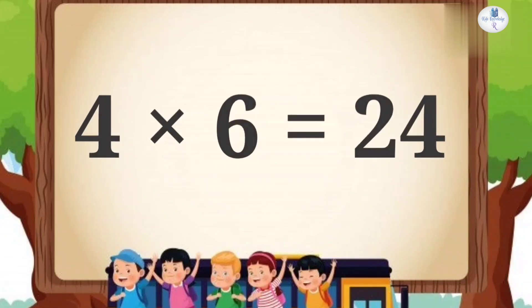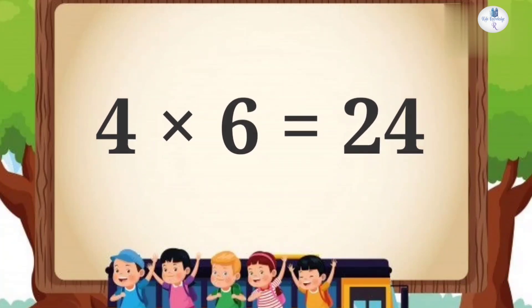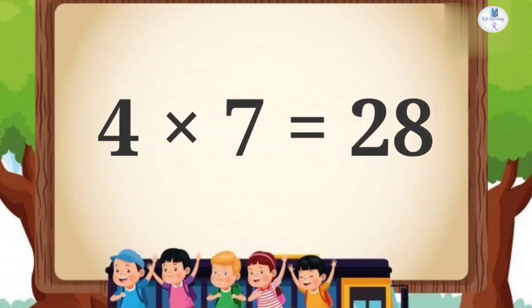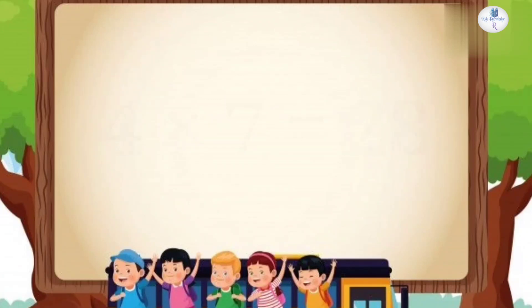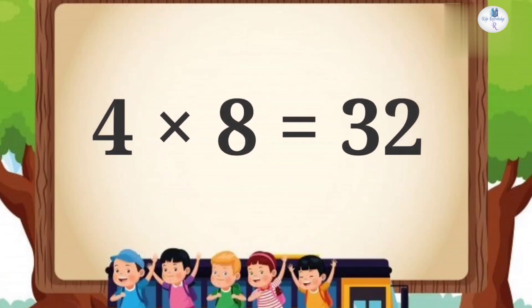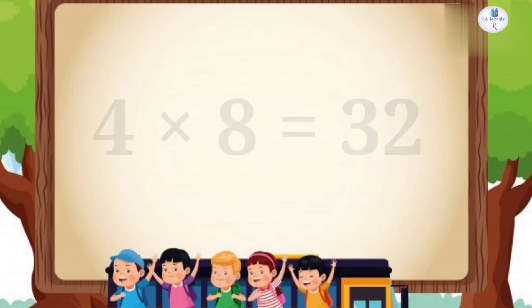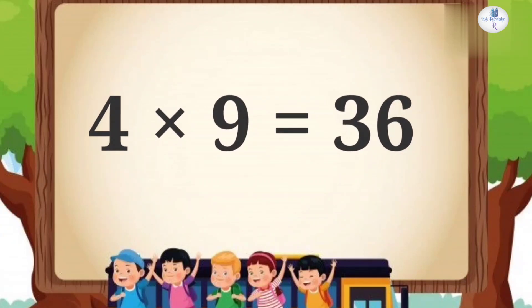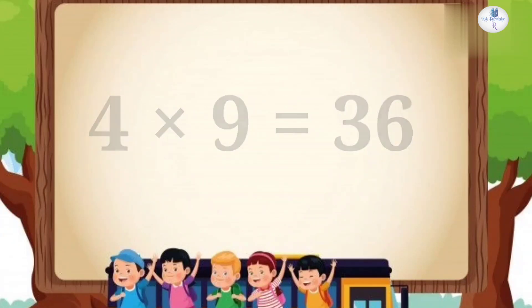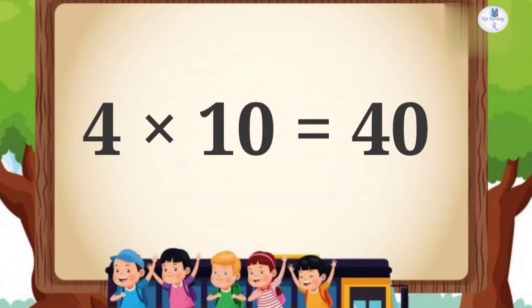Four six are twenty-four. Four sevens are twenty-eight. Four eights are thirty-two. Four nines are thirty-six. Four tens are forty.